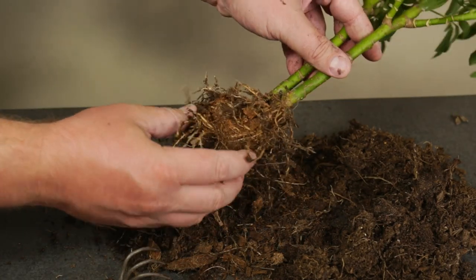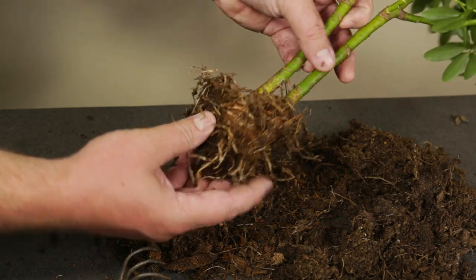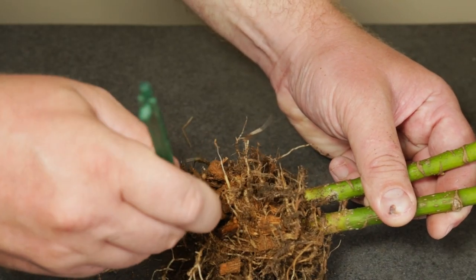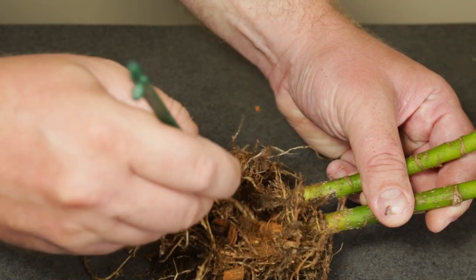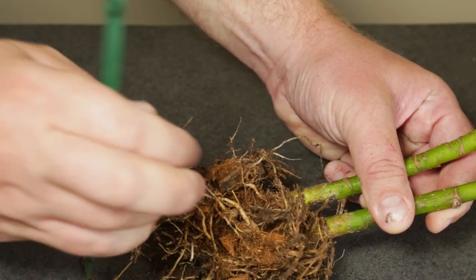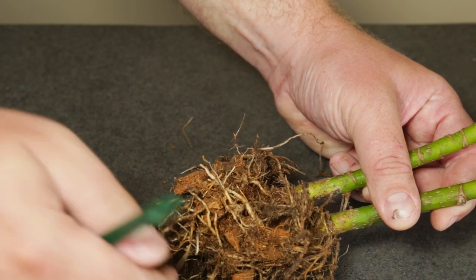My two dwarf Schefflera still won't separate even after removing most of the soil, so I'm trying to break up this mass of roots that is keeping the two plants together. The roots are tangled together around some pretty big chunks of coconut husk in here, so I'll have to get rid of those too.